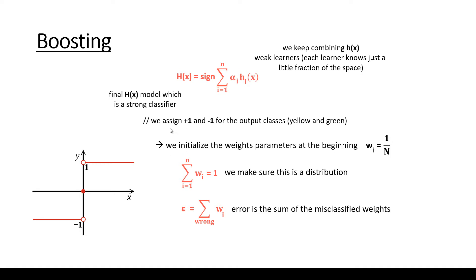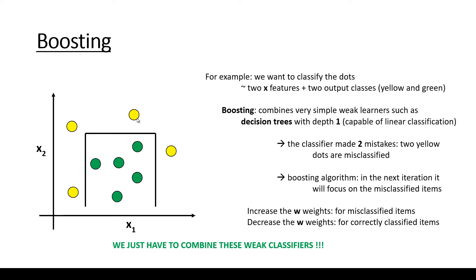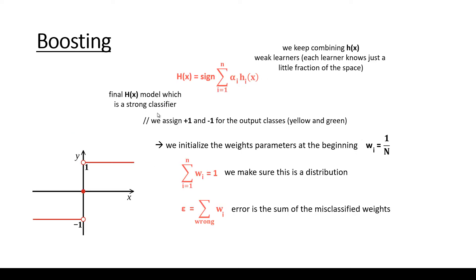You may ask why the sign function is needed. Usually we are not dealing with colors as labels — we don't have yellow and green. Instead, we have plus 1 and minus 1 labels. So we assign plus 1 and minus 1 for the output classes, and that's why the sign function is important — it returns either plus 1 or minus 1, matching the output classes.